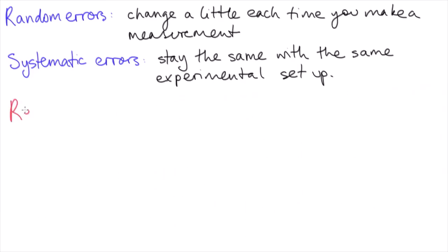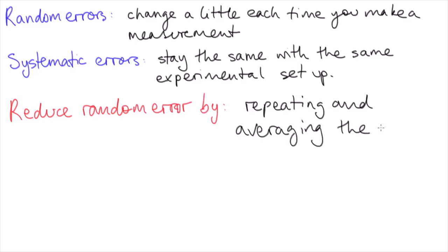Random errors tend to fluctuate around the true value. So one way to reduce random error is to repeat a measurement many times and then take an average of those values. The many small random errors will cancel out overall.